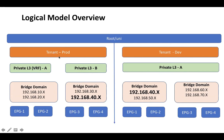In the prod tenant, we have two VRFs — two separate routing instances. Then we have bridge domain, which is a container for subnets; we can have multiple subnets in a bridge domain. We have to link the bridge domain to a VRF, and each bridge domain must have at least one subnet. Then we have EPG, which is a container for endpoints that require the same policy treatment.